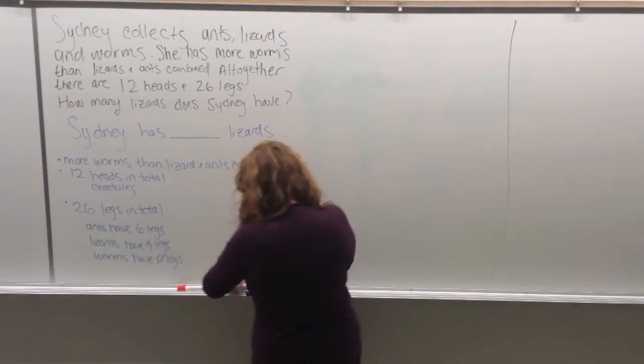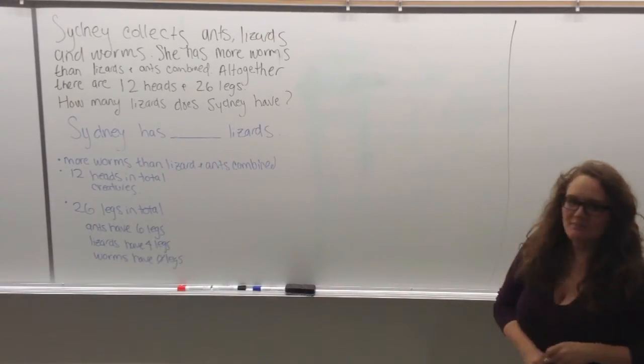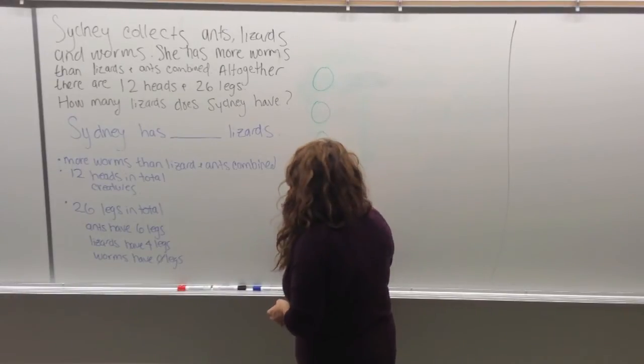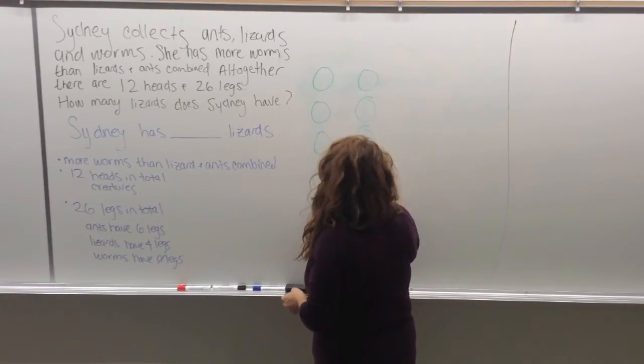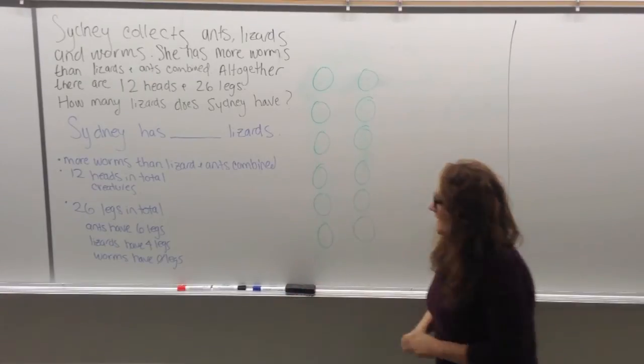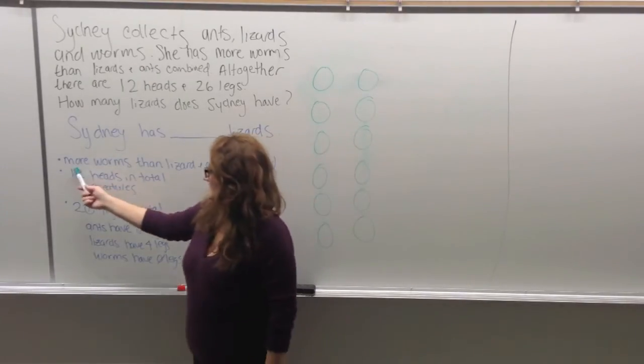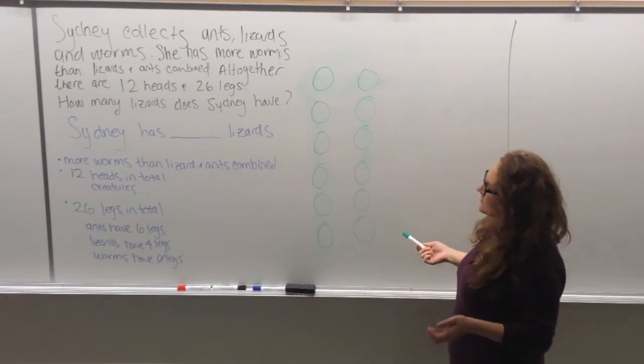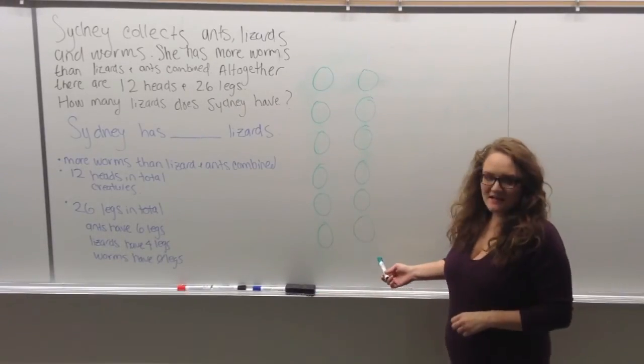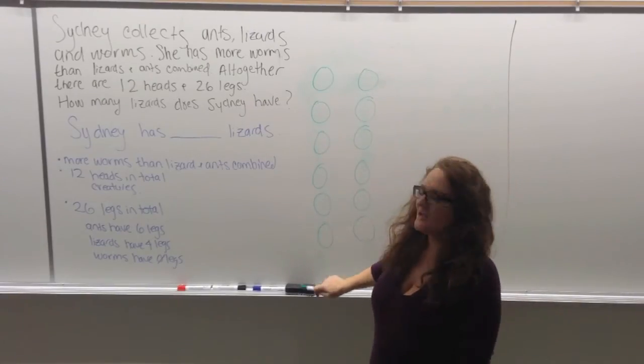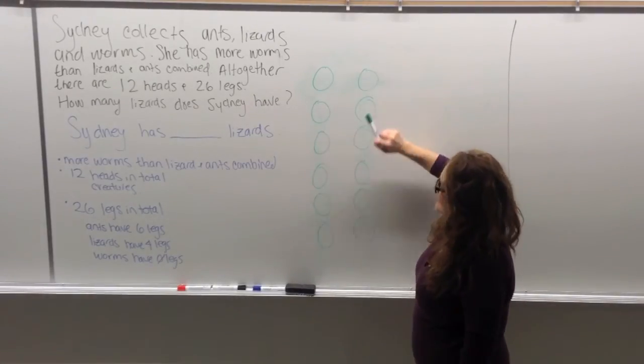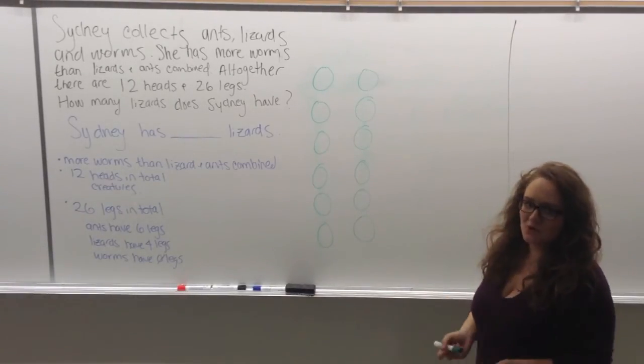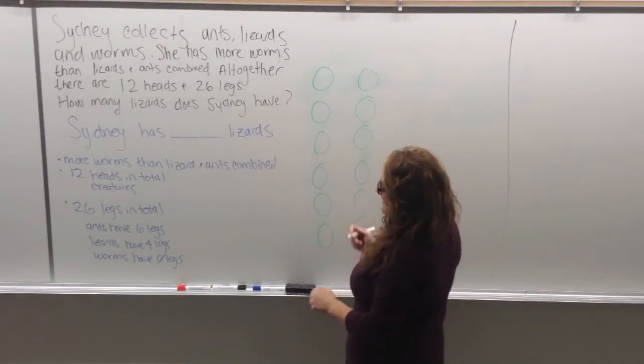Alright, so to get started, one way we can tackle this problem is by drawing it out. So we're going to start off by drawing out our 12 heads. And looking at the first sentence, we have more worms than lizards and ants combined. So all together we have 12. So if we have more worms than lizards and ants combined, we must have at least 7 worms. And that's because if we have 6 worms, then we would have the same amount of worms as lizards and ants combined. So because we know we have more, we must have more than 6, and therefore we must have at least 7 worms.